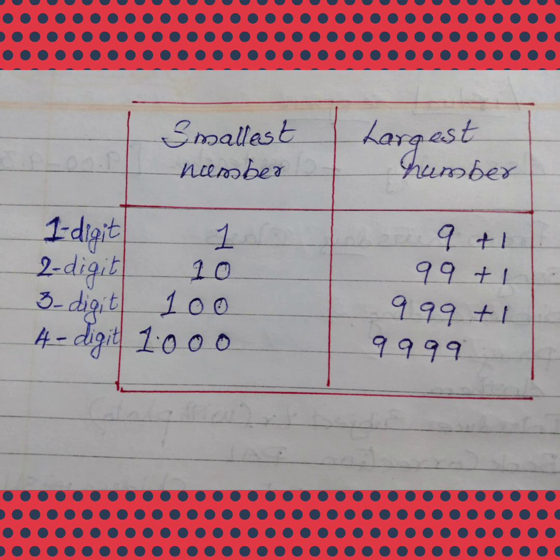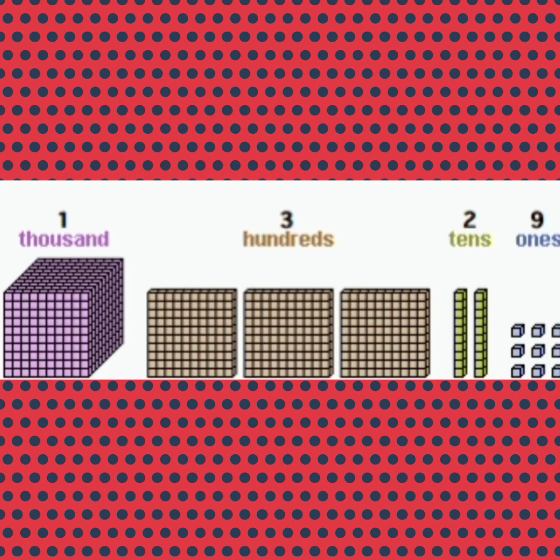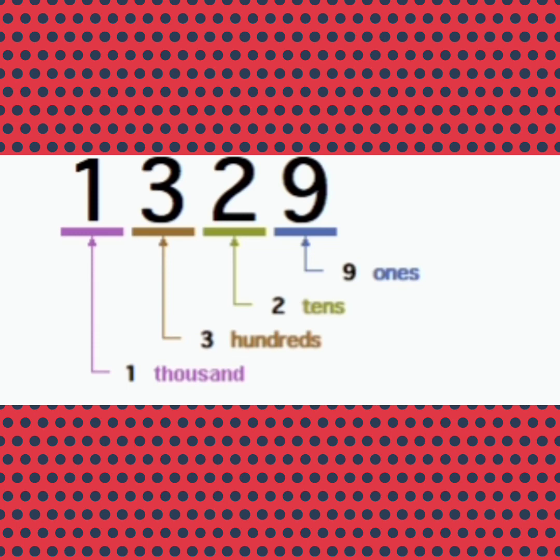Have a look at some examples. Now, look at the blocks. 9 ones, 2 tens, and 3 hundreds, and 1 thousand. How to read this? 1329.